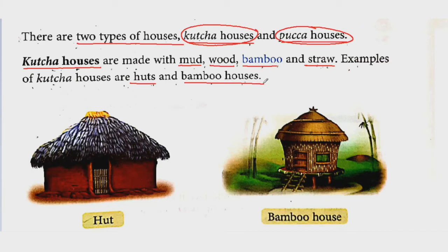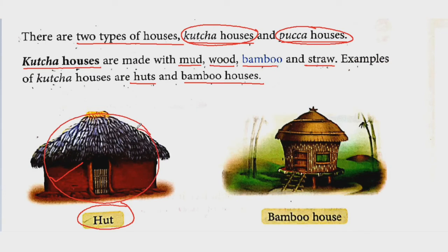Look at this picture — this is a picture of a hut, jhopdi ki picture hai. Yeh mud, wood aur straw se bani hai. This is a kaccha house — aur kaccha house zyada strong bhi nahi hoti. See the second image — this is a picture of a bamboo house, jo bamboo se banata hai. This is also an example of a kaccha house.